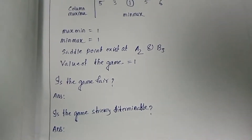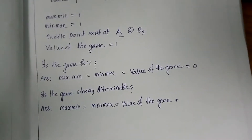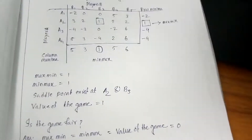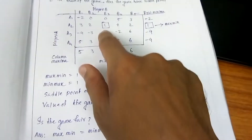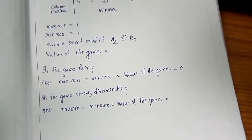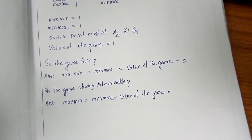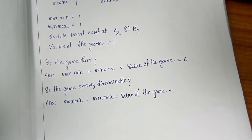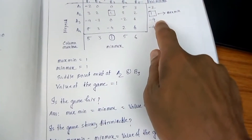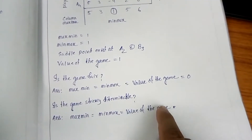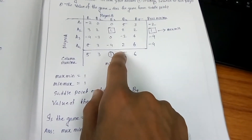Applying the fair game condition: maximin is 1, minimax is 1, and the value of the game is 1. Since the value is not zero, this game is not a fair game. For strictly determinable: maximin equals 1, minimax equals 1, and value of the game equals 1 — all three are equal, so this problem is a strictly determinable game.